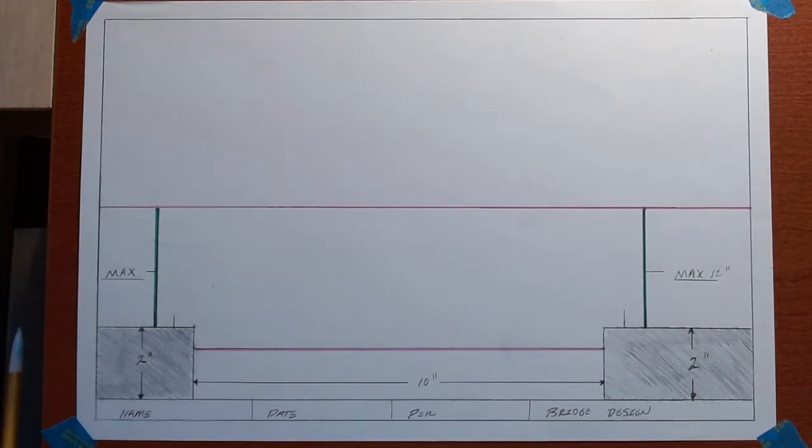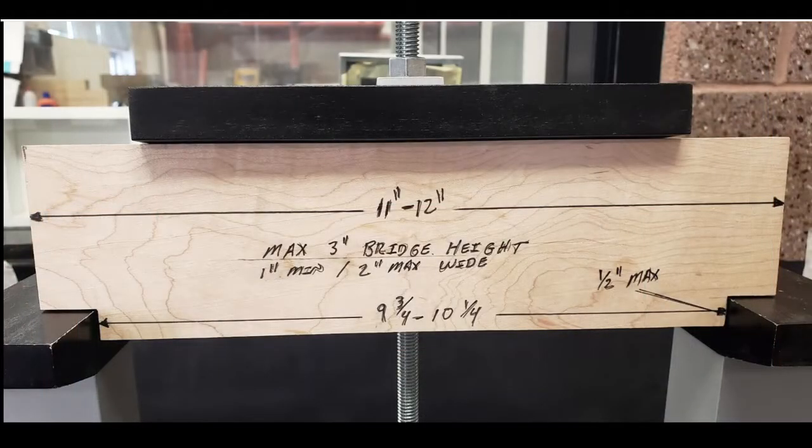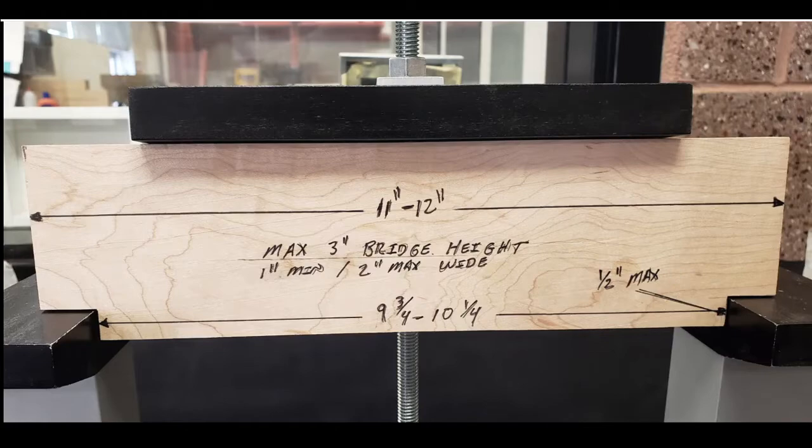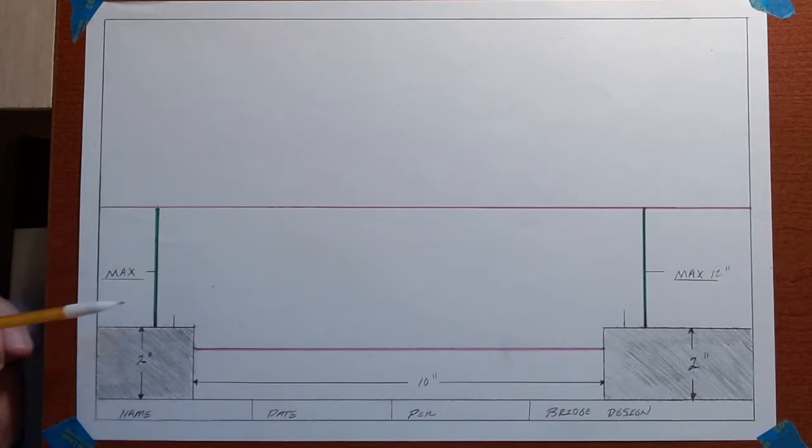The second thing I did is I measured up here and put another pink line that is exactly three inches above the platforms, because it says right here max 3-inch bridge height. That means your bridge cannot go any taller than three inches from the platforms to the top of the bridge.